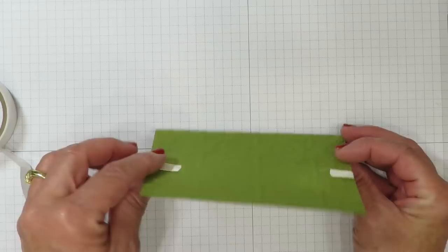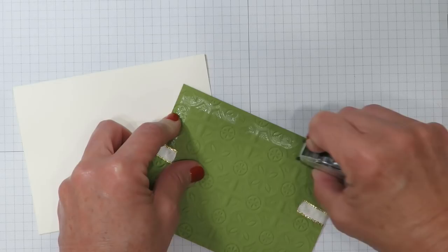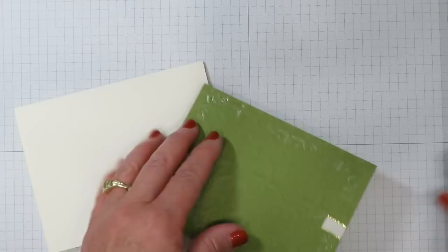I've got my vanilla card base here so I'm going to turn this over and I'm going to add adhesive to the back side. I'm going to be fairly generous on this one because we've got quite a bit of embossing here and I want to make sure that I get inside all those little nooks and crannies. And then I'm going to layer this on the vanilla card base leaving a slight border all the way around.